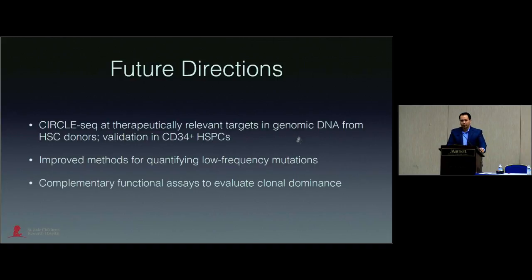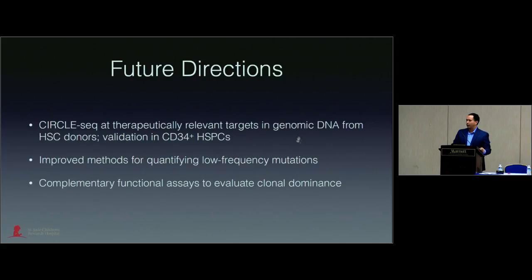Future directions with CircleSeq include obvious application for off-target analysis in therapeutically relevant cells such as CD34-positive hematopoietic progenitor cells from donors. Another major challenge is improving methods for quantifying low-frequency mutations — targeted tag sequencing helps, but in cells where you can't efficiently introduce short tags, getting below 0.1% remains difficult. Finally, we're thinking about complementary functional assays to evaluate clonal dominance and the functional effects of off-targets, to sort out which ones are important.